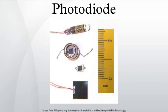For many applications either photodiodes or photoconductors may be used. Either type of photosensor may be used for light measurement, as in camera light meters, or to respond to light levels, as in switching on street lighting after dark.